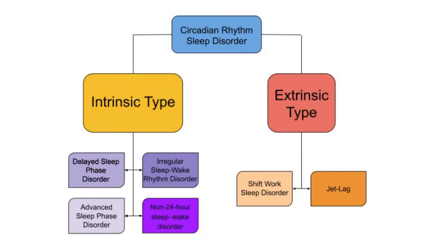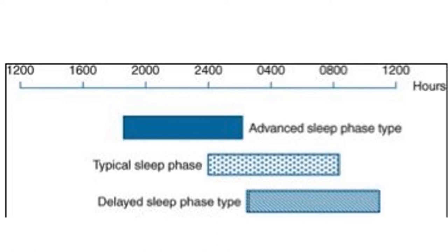There are circadian rhythm sleep disorders of two types: intrinsic and extrinsic. Intrinsic types include delayed sleep phase disorder, advanced sleep phase disorder, irregular sleep-wake rhythm disorder, and non-24-hour sleep-wake disorder. Extrinsic types include shift work sleep disorder and jet lag. Here is the typical sleep phase pattern.